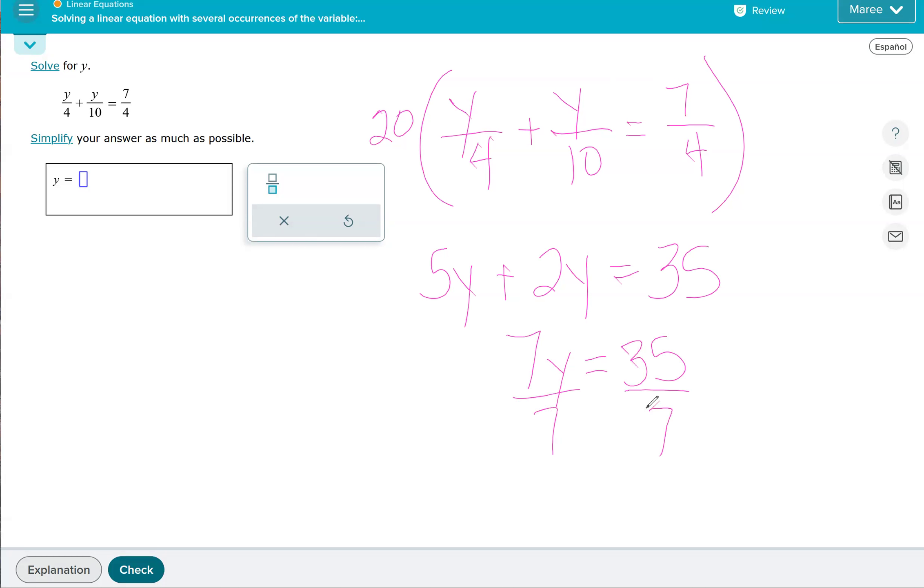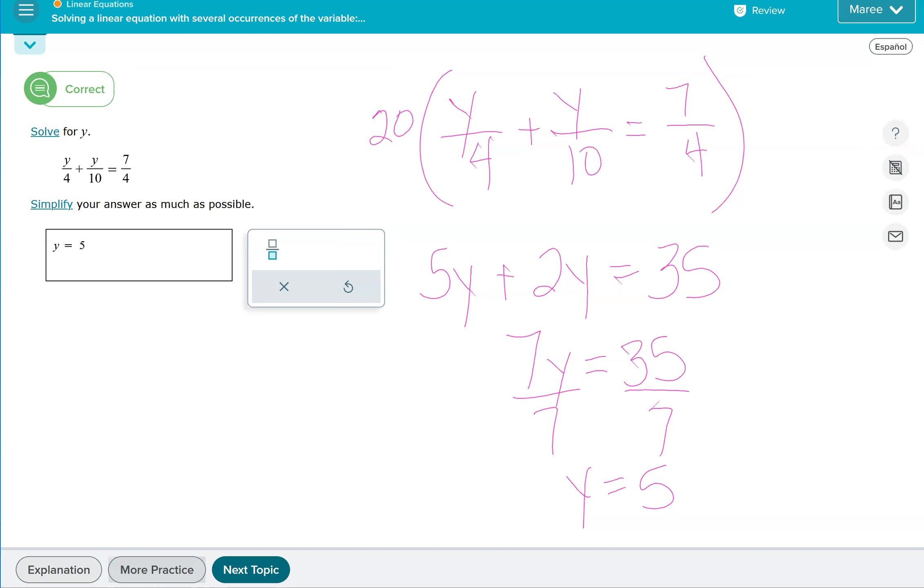We divide by 7 so that we can see what number times 7 gives me 35, and that will be 5. So y will be equal to 5. You can always plug it back in into your equation to check your answer to see if it works. And that's the end of the lesson.